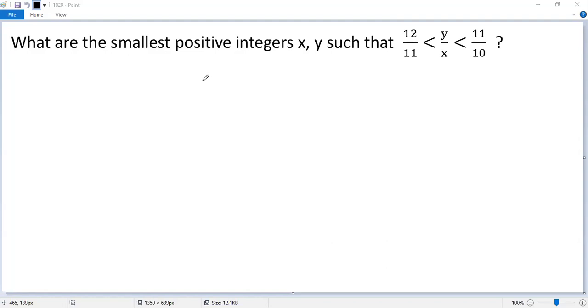Let's see how to find the smallest possible integers x and y satisfying the given inequalities. We know the left side and right side are close to 1, so let's subtract 1 from each part.